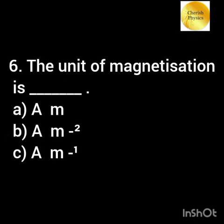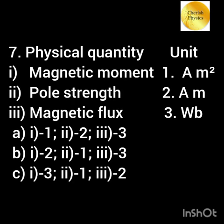The unit of magnetization or intensity of magnetization is dash. Match the unit with their corresponding physical quantity.